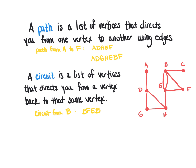Another circuit from B: I could go from B to E and then take the second edge right back to B. I could also take a longer circuit that goes from B to E to H to G to D back to H to E and to B. As long as I end up where I started, that is considered a circuit.